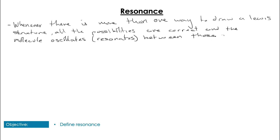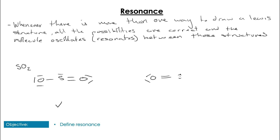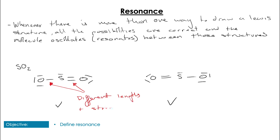So let's demonstrate this using SO2. Now if we draw the structure of SO2, we know that we're going to have a single bond on one side and a double bond on the other side bonded to the oxygens. We don't know which bond should be single and which should be double. In fact, both of these molecules are reasonable Lewis structures. However, because they have different bond lengths and strengths, we have to say that they would be switching backwards and forwards between each other.